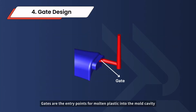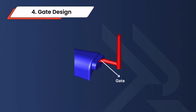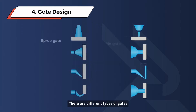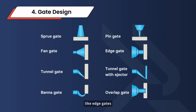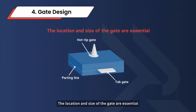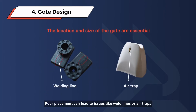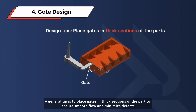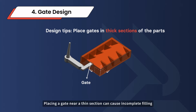Gates are the entry points for molten plastic into the mold cavity. There are different types of gates, like edge gates, pin gates, and fan gates. The location and size of the gate are essential — poor placement can lead to issues like weld lines or air traps. A general tip is to place gates in thick sections of the part to ensure smooth flow and minimize defects. Placing a gate near a thin section can cause incomplete filling, leading to weak spots in the part.